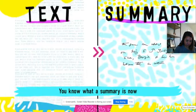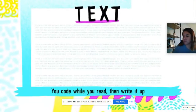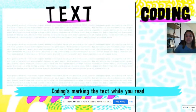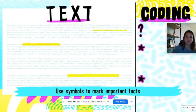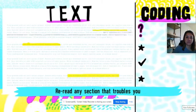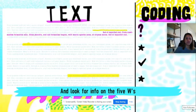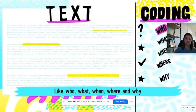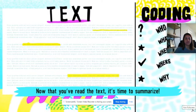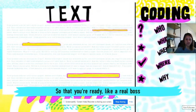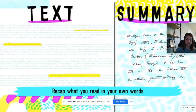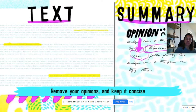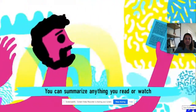Now that you know what a summary is, here's how to write one. First, code while you read — coding means marking the text as you go. Use symbols to mark important facts, like a checkmark to note something you already knew, and reread any section that's confusing. Look for information on the five W's. As you read the second time, take good notes and write down what stands out most. Then organize your notes, gather your thoughts, and recap what you read in your own words using complete sentences and key terms. Once you write the summary, review and revise — remove your opinions and keep it concise. You can summarize anything you read or watch.